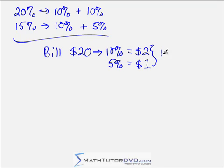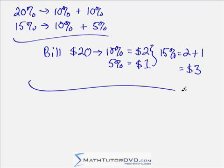So in order to find what I really want to know is 15%, then all I do is take 2 plus 1, the $2 plus the $1. So the final tip is going to be $3 for a 15% tip on $20.